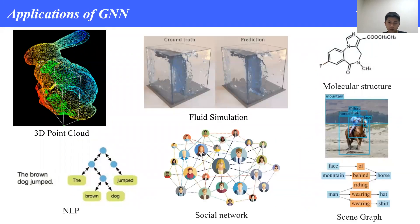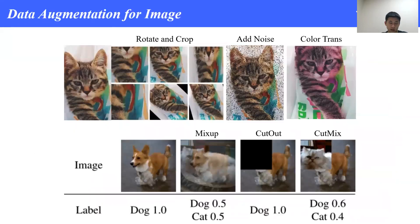Here are some tremendous applications of GNNs, like 3D point clouds, fluid simulation, molecular structure discovery, social networks, and so on. Syntax trees in the NLP field and scene graphs in the CV field are also application scenarios of GNNs. Data augmentation has proven to be an effective method to boost model performance in deep learning. It has been widely used in computer vision. Let's first review some data augmentation methods.